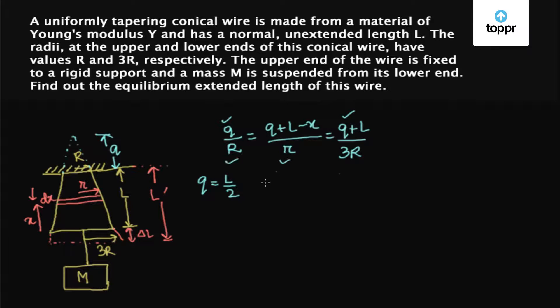And from this and this we get r equals 3 capital R minus 2X capital R upon L.